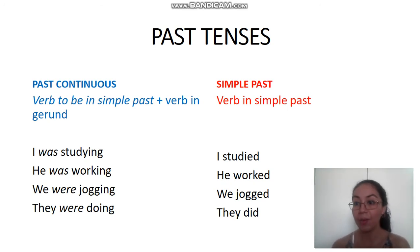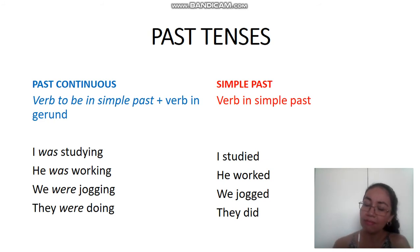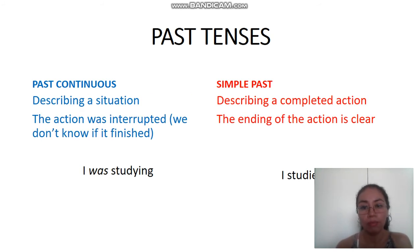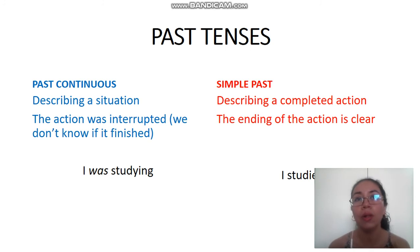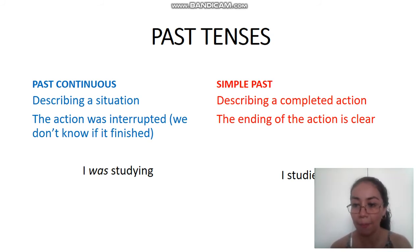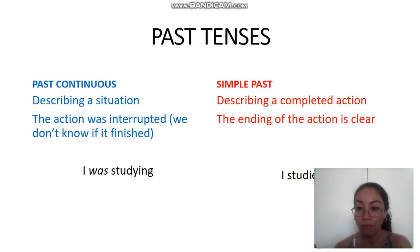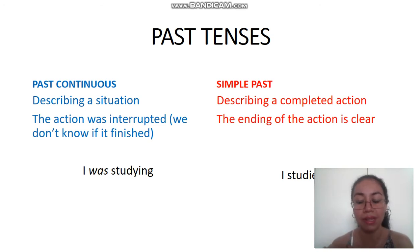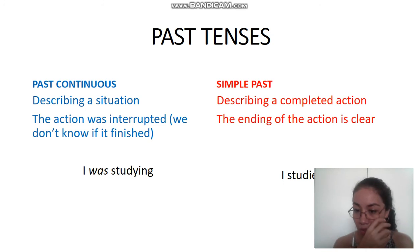Now let's remember when to use one or the other. We use past continuous when we are describing a situation — for example, 'my friend was sitting' — it's not the main idea, just describing what was happening. We also use it when the action was interrupted and we don't know if it finished. For example, 'I was studying when you called' — it was interrupted, I couldn't finish.